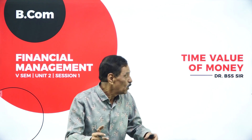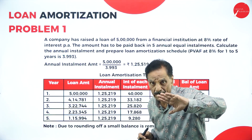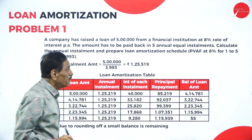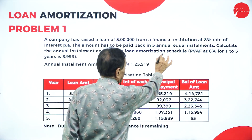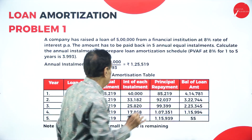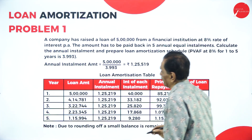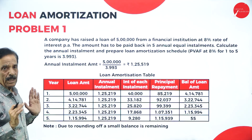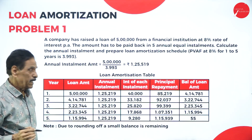What I am going to explain in this session: what do you mean by Time Value of Money, and Loan Amortization — meaning loan repayment. How the loan will be repaid? A company has raised a loan of 5 lakh from a financial institution at 8% rate of interest. The amount has to be paid by 5 annual equal installments. Calculate the annual installment and prepare the loan amortization schedule. PV factor at 8% for 1 to 5 years is 3.993. First, we have to calculate the annual installment.